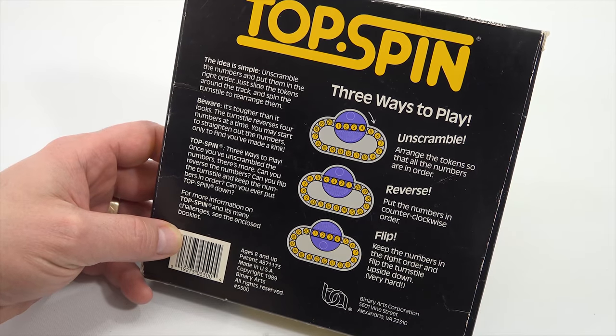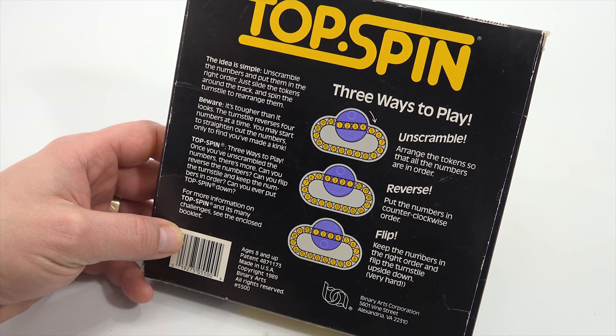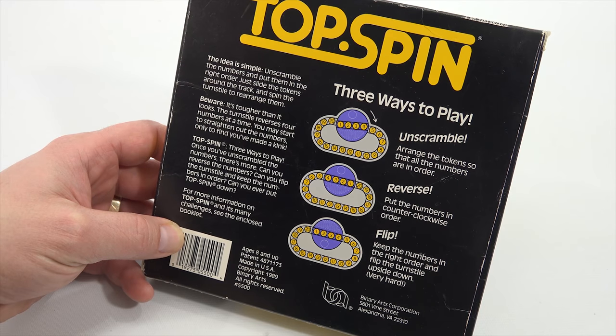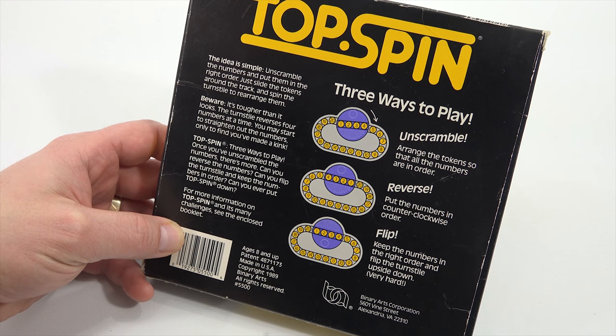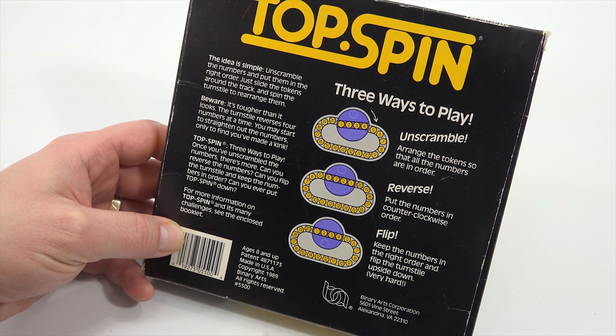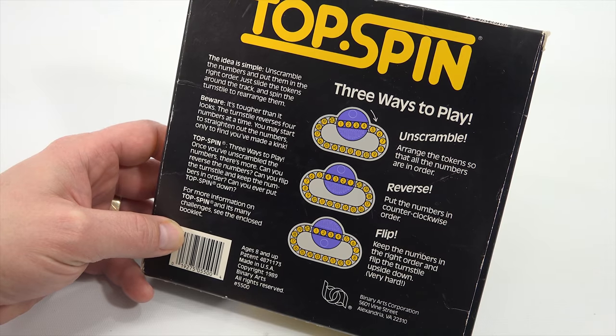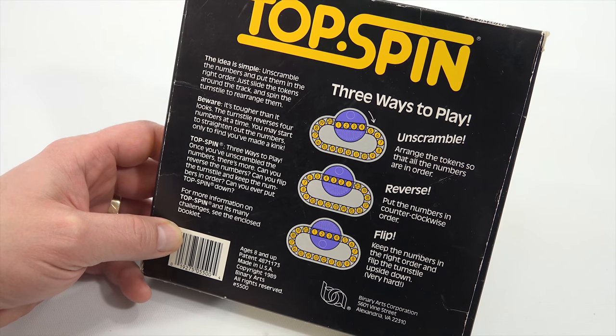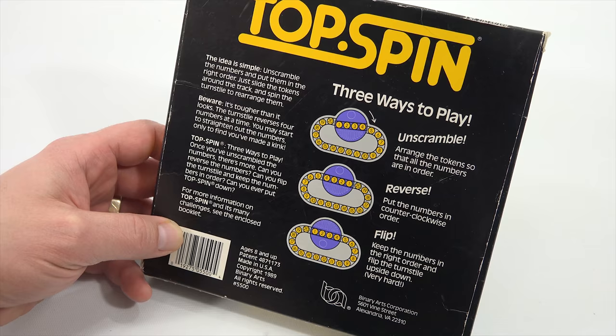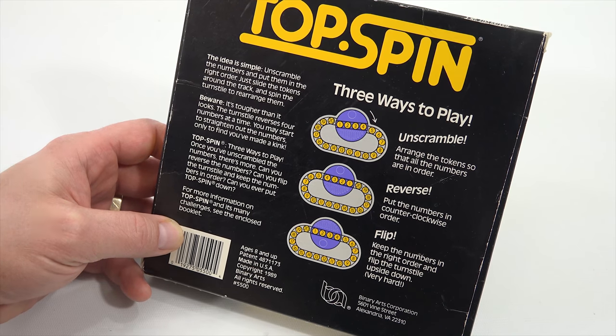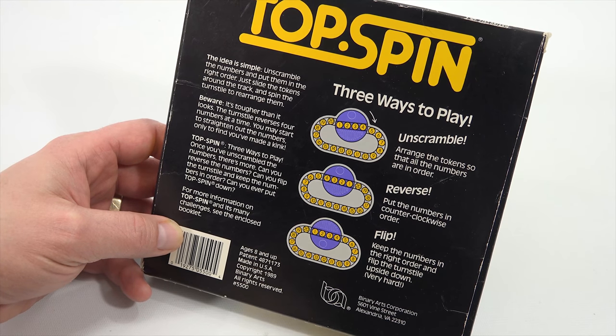Top Spin, three ways to play. Once you've unscrambled the numbers, there's more. You can reverse the numbers. Can you flip the turnstile and keep the numbers in order? So, three ways to play. Unscramble: Arrange the tokens and all the numbers are in order, one, two, three, all the way to 20. Reverse: Put the numbers in counterclockwise order. Flip: